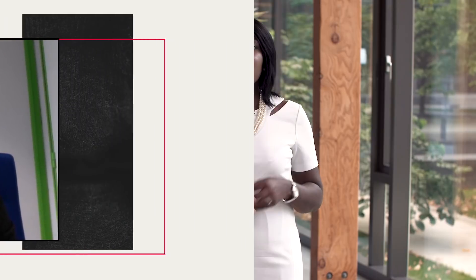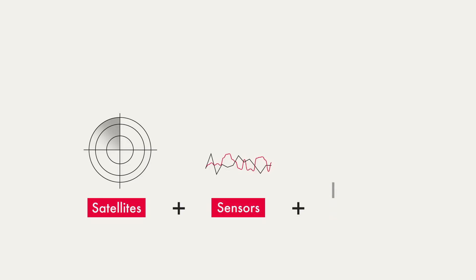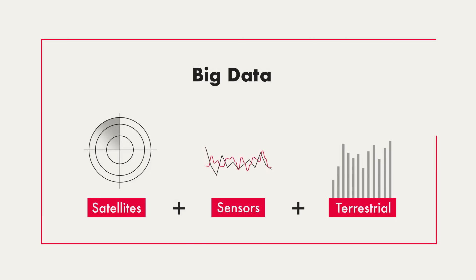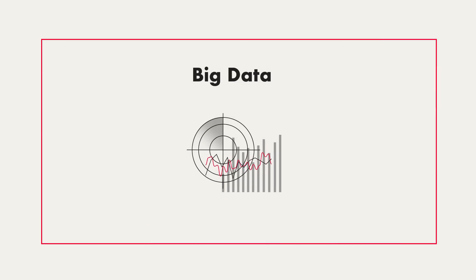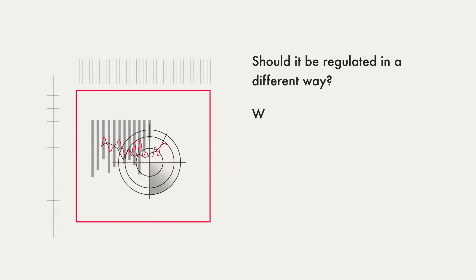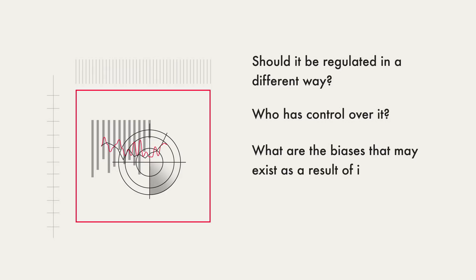So we've talked about the science, the methods, and the data from satellites. But if the trend is now towards integrated data — coming from satellites, sensors, and the ground — we inevitably run into questions of big data. When we combine the data, do we have a new product? Should it be regulated differently? Who has control over it? What are the biases that may exist as a result of integration? And what are the security implications of an open data policy?